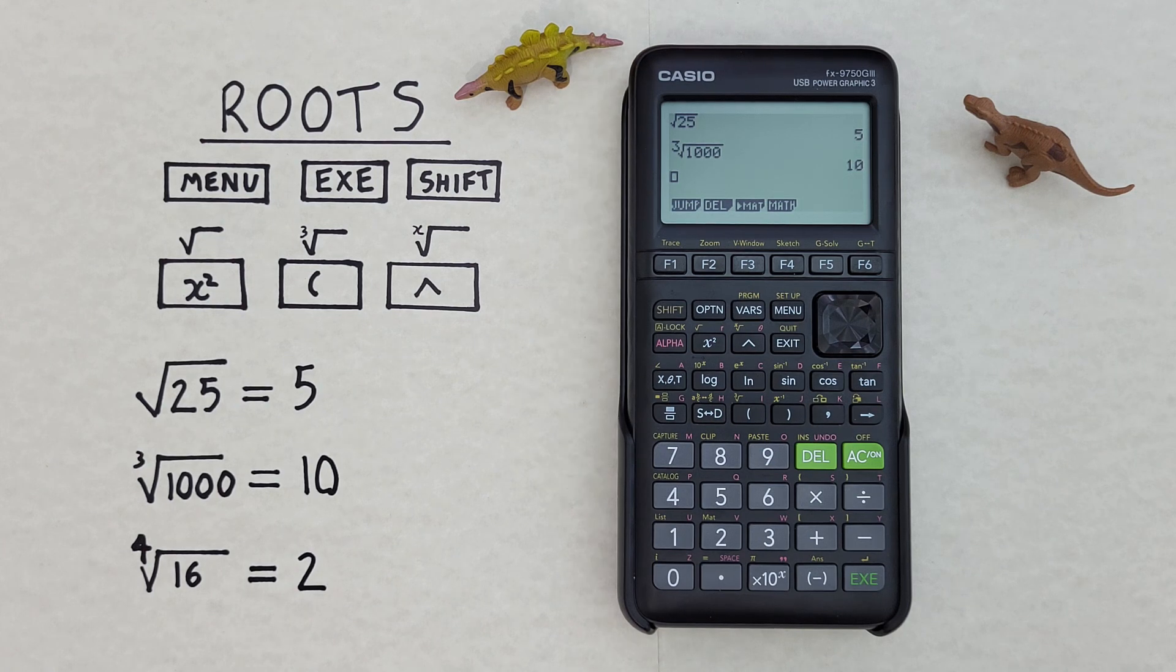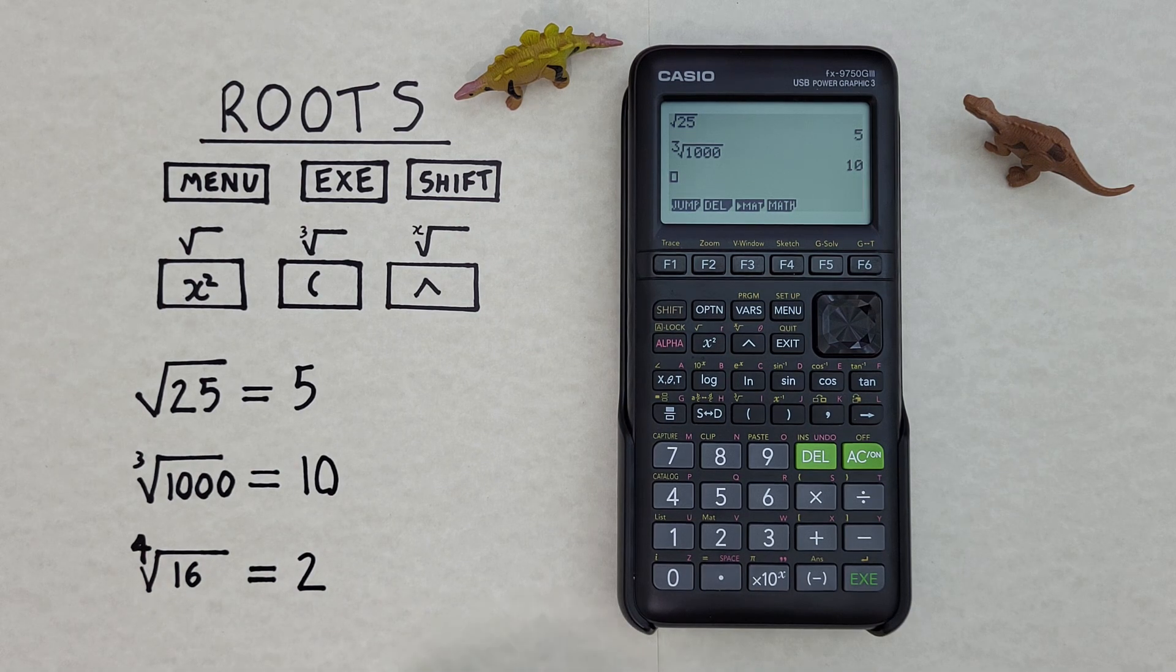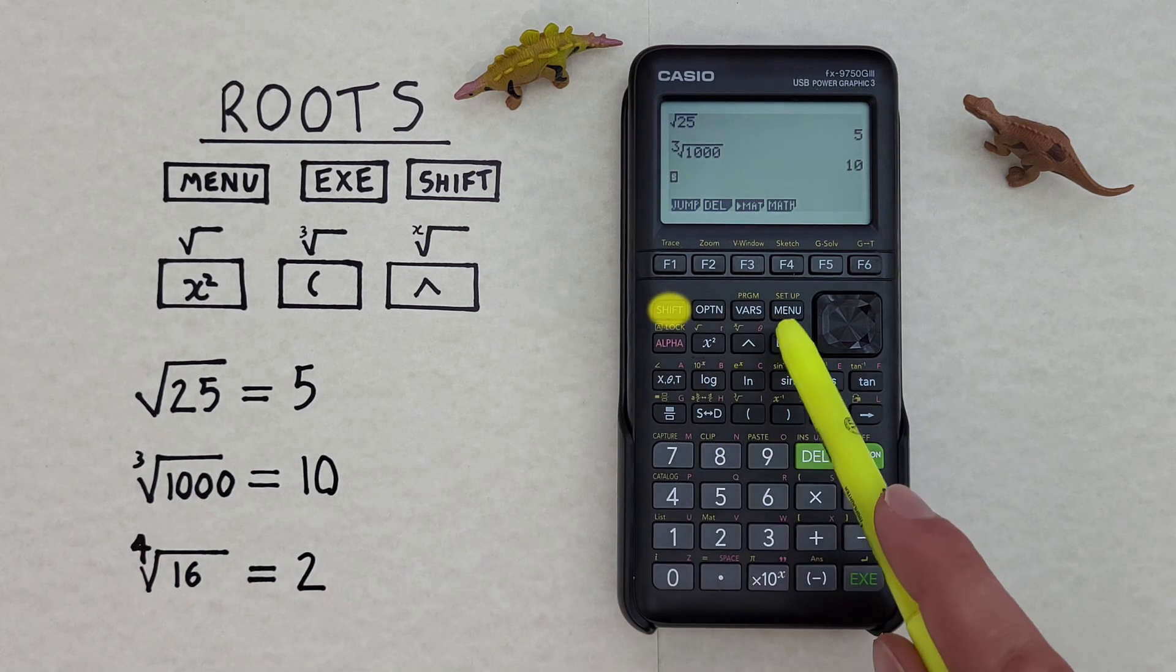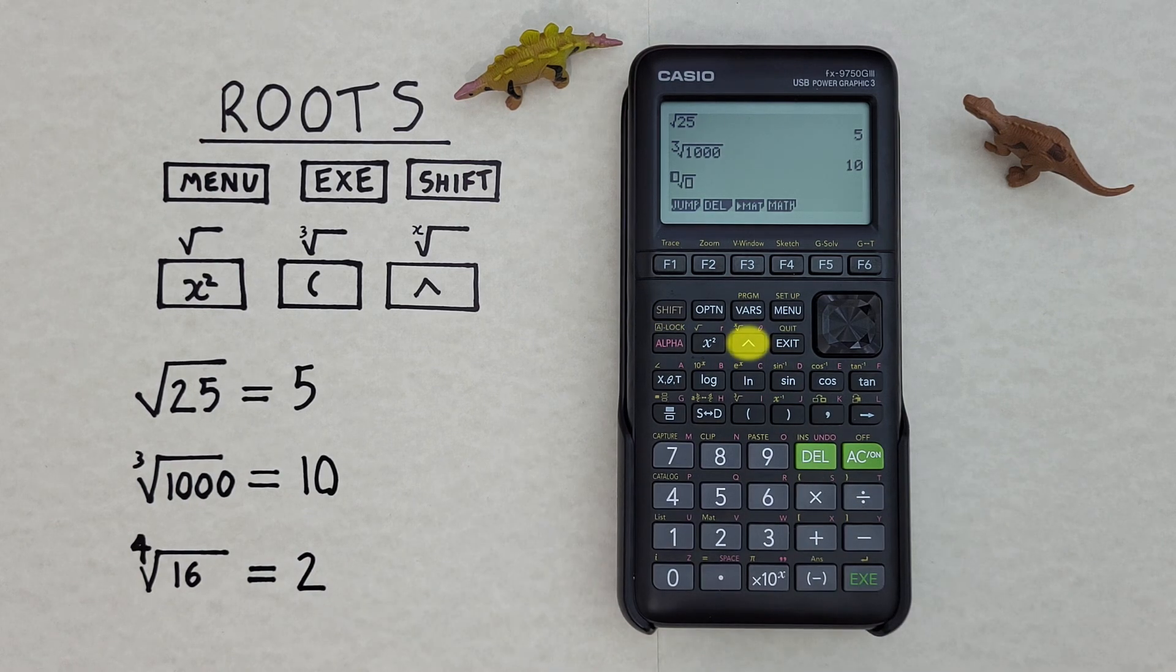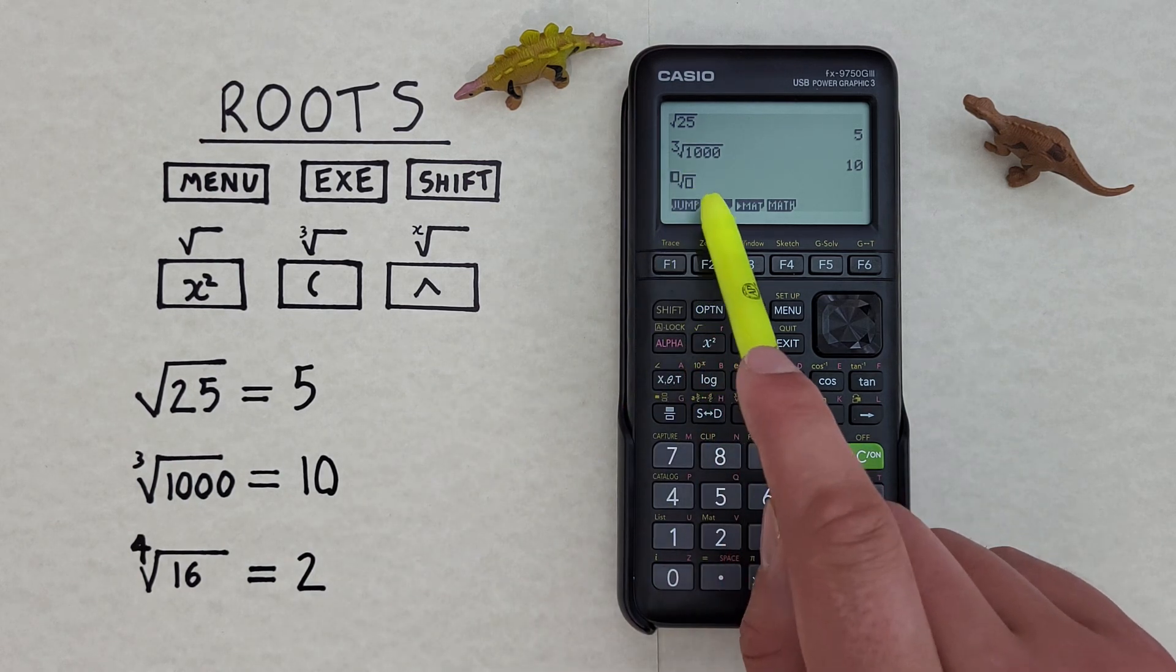What about a root that isn't a square root or a cube root? For example, the fourth root of 16. To find that, we press the shift key and then the up arrow or caret key. There we go. We now have two boxes to fill in.